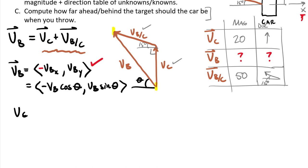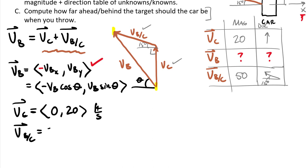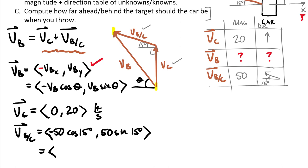VC is straightforward — it only has a Y component: (0, 20) feet per second. The velocity of the ball relative to the car has magnitude 50 feet per second at 15 degrees. The X component is negative — going left — so: negative 50 cosine(15°), and the Y component is positive: 50 sine(15°). Computing those gives approximately negative 48.296 and positive 12.94 feet per second.